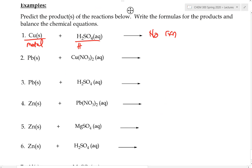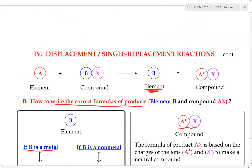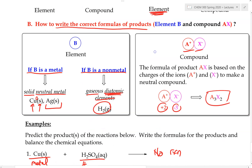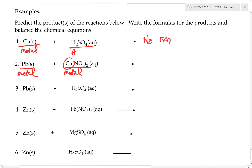Example 6: a piece of lead dropped into a solution of copper(II) nitrate. If anything is going to happen, lead (a metal) would replace copper (also a metal). Can lead replace copper? On the activity series, lead is to the left of copper, so lead is more reactive than copper. Therefore yes, there will be a reaction. Copper gets replaced and becomes a free element: Cu(s), which is solid with charge zero.